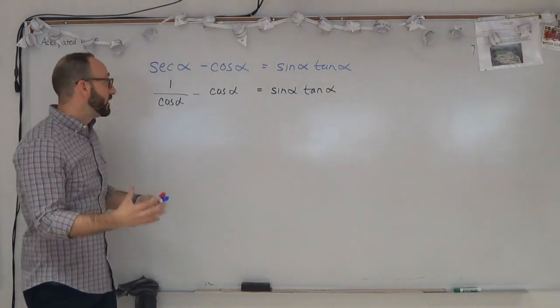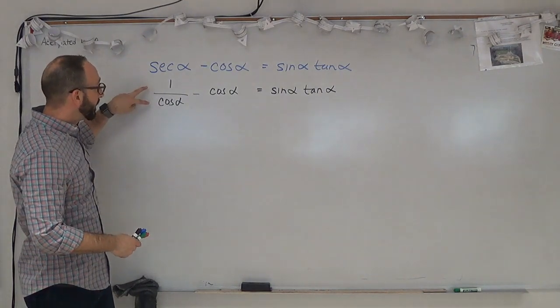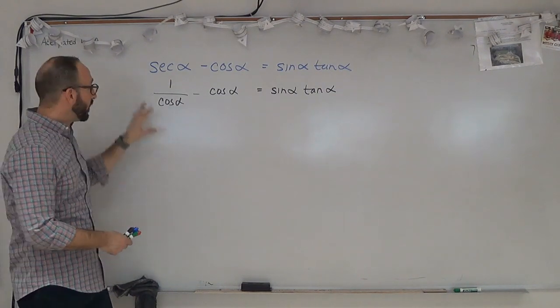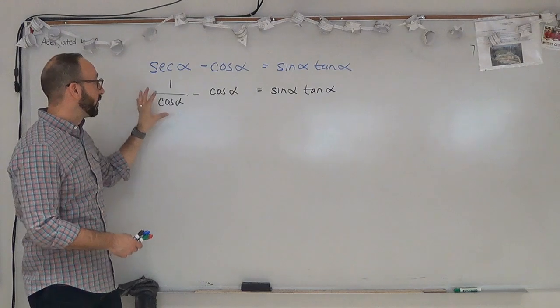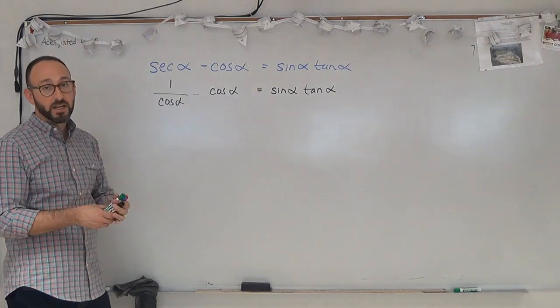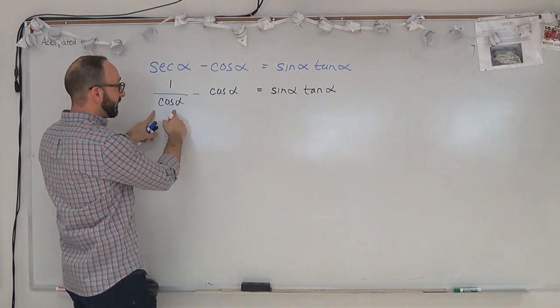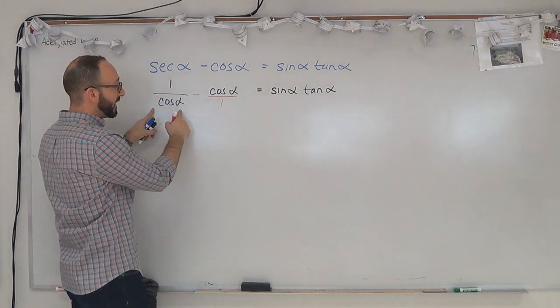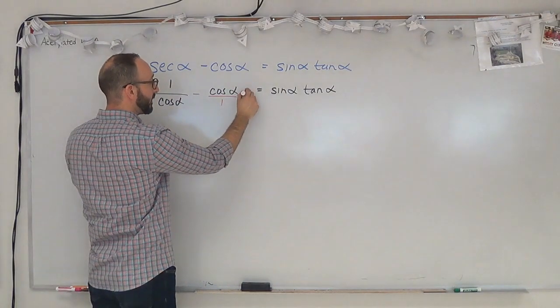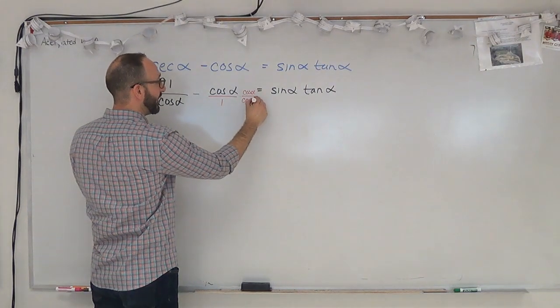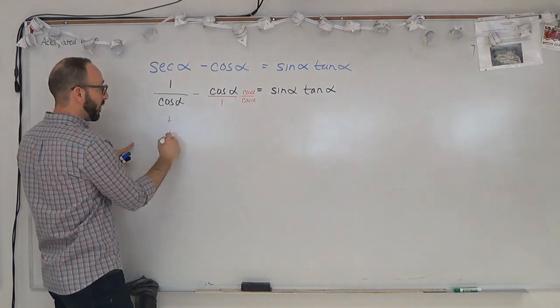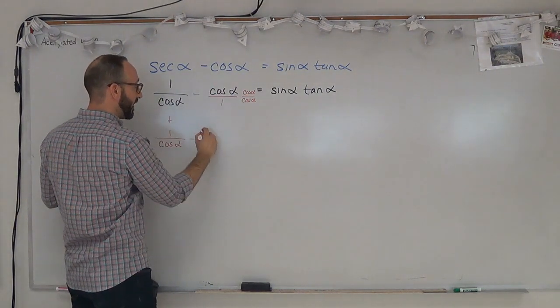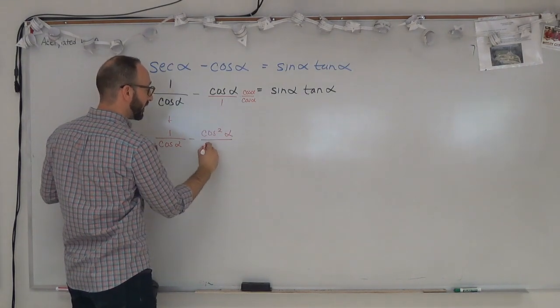Now, one of the strategies that we can use is if we have expressions, especially one that's a fraction and one that doesn't appear to be a fraction, we try to combine these two together. So we're trying to complete this subtraction. We're going to need a common denominator in order to do that. In this case, this is cosine over 1, so the common denominator has to be cosine. So we're going to multiply this by cosine alpha over cosine alpha, which is going to leave us with 1 over cosine alpha minus cosine squared alpha all over cosine alpha.